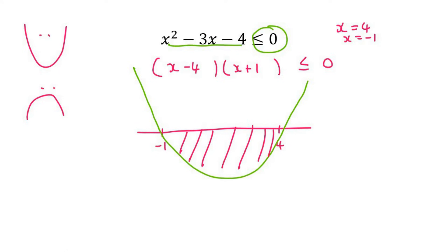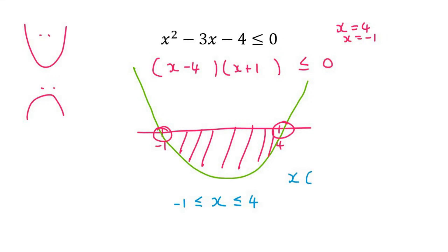So your answer is going to be from minus 1 up to 4. You're going to say x must be bigger than or equal to minus 1 and smaller than or equal to 4 — that's because of the signs they gave us. If you prefer interval notation, you would write x is an element of the closed interval from minus 1 to 4, using square brackets on both sides.